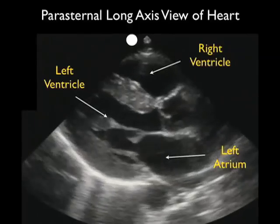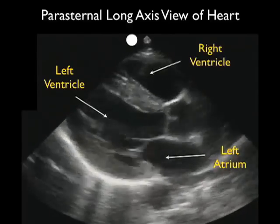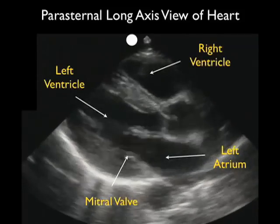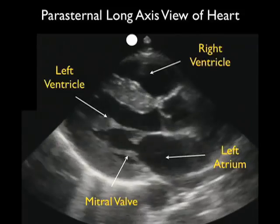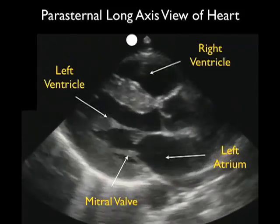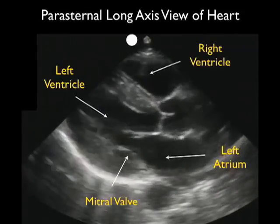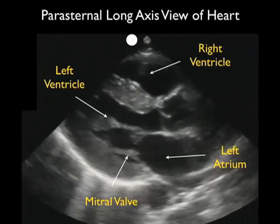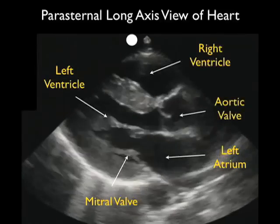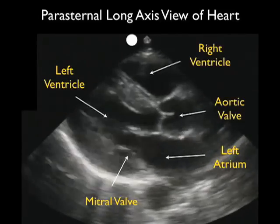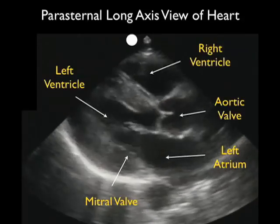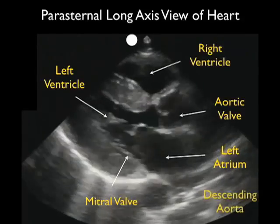We see the left atrium to the right of the left ventricle. Notice the mitral valve flipping up and down in between the left atrium and the left ventricle. Now just above the left atrium and to the right of the left ventricle, we see the aortic valve. And notice there, just to the right of the aortic valve, a little bit of the diamond-shaped aortic root. This will be our left ventricular outflow tract.